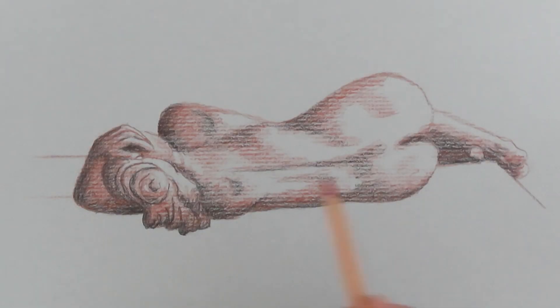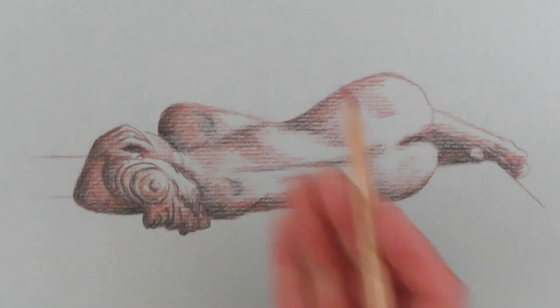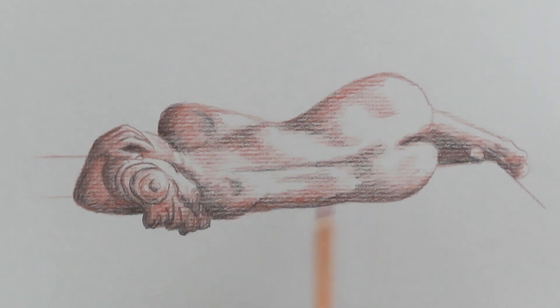Before I put in my highlights with my white pencil, I want to add some ground, tethers the whole body to the surface. So what we need to do is we need to put in some shadow.